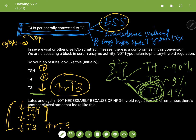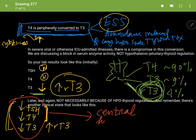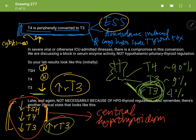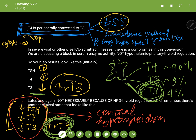If you just look at the three lab values — decreased T3, decreased T4, decreased TSH — it looks like central hypothyroidism. How would you tell central hypothyroidism from Euthyroid Sick Syndrome? The answer is reverse T3. Reverse T3 is increased in Euthyroid Sick Syndrome, whereas it's normal in central hypothyroidism.